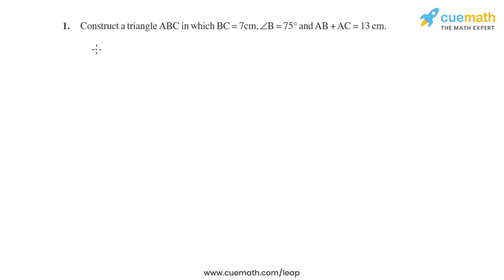Question 1 of this exercise says construct a triangle ABC in which BC equals 7 centimeter, angle B equals 75 degrees, and AB plus AC equals 13 centimeter.